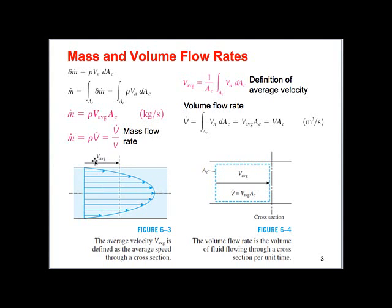The cross-sectional area is the area normal to the flow direction — for a pipe, that's the pipe's circular cross-section based on the pipe diameter. The density of the fluid is just the density of the fluid, and we can express it either as rho or as 1 over the specific volume.